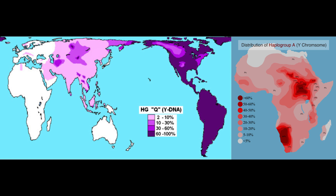Presented as examples of these groups are the frequency maps of the Y-DNA group Q, shown in purple to the left, and group A, shown in red to the right.